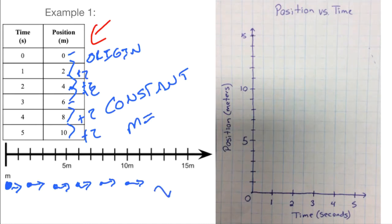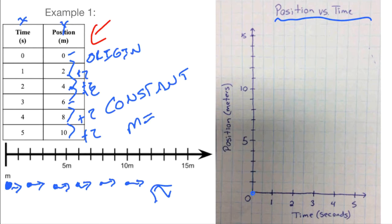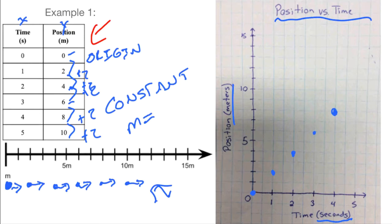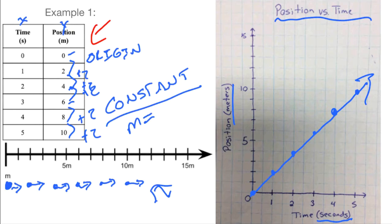Now we just need to take all this information from our data table and put it on the position versus time graph. We're just going to plot our points — think of it like math class, where time is our X coordinates and position is our Y coordinates. At zero seconds we're at the zero meter position. At one second we're at two meters, two seconds at four meters, three seconds at six, four seconds at eight, and five seconds at ten. If you draw a line right through there — that looks pretty straight. Constant.